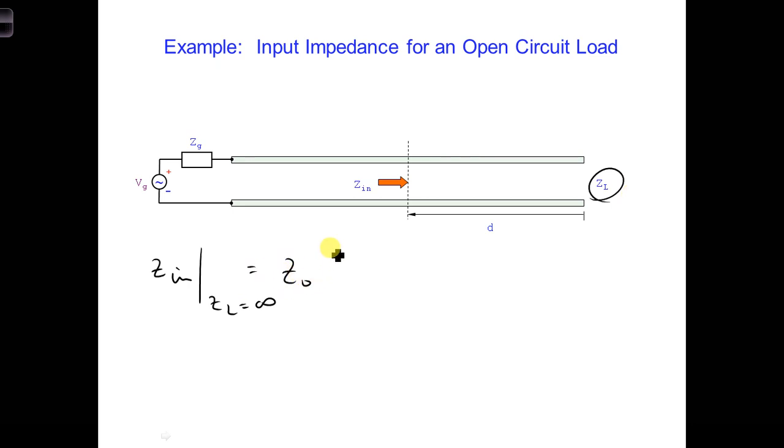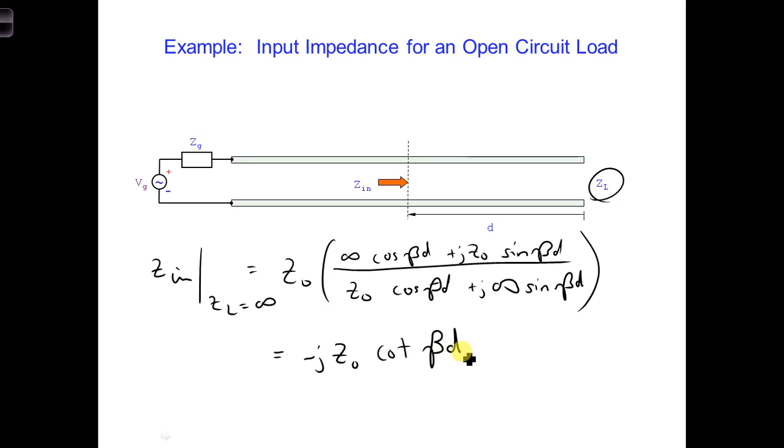Is Z naught times infinity cosine beta d plus j Z naught sine beta d, all over Z naught cosine beta d plus j infinity sine beta d. And we can simplify this to minus j Z naught cotangent beta d.